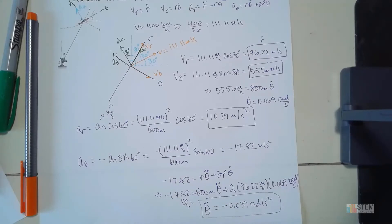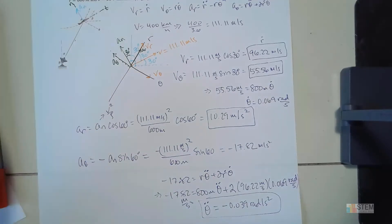And that's it — that's how you solve for all four unknowns. That was the end of the test, so hopefully all of that made sense. See y'all next time.